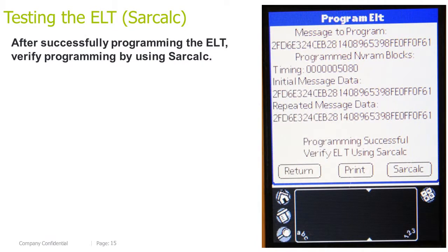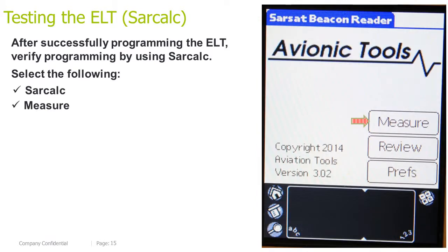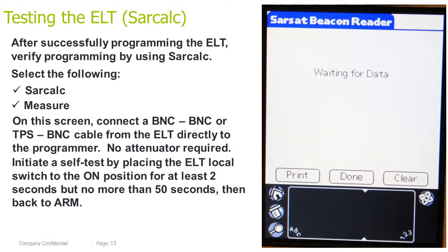Testing the ELT using SARCALC. After successfully programming the ELT, verify programming by using SARCALC. Select SARCALC, then Measure. On this screen, connect the BNC to BNC or TPS to BNC cable from the ELT directly to the programmer. If your ELT only has one antenna output, use the BNC to BNC antenna output. If your ELT has two antenna ports, use the TPS to BNC cable. No attenuator is required. Initiate a self-test by placing the ELT local switch to the ON position for at least 2 seconds but no more than 50 seconds, then back to ARM.